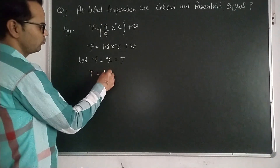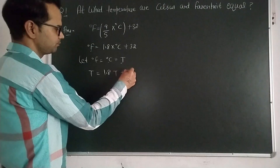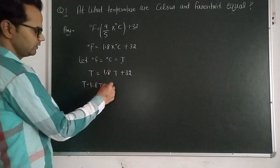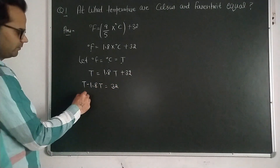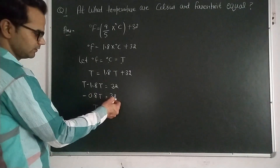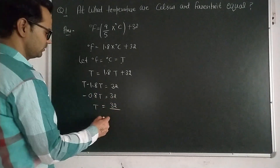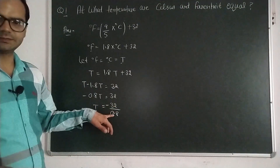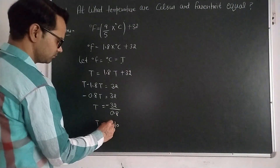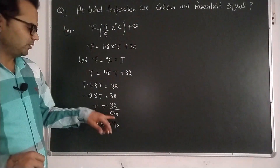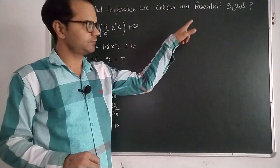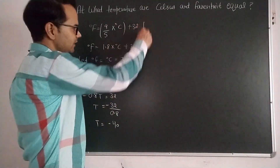Substituting: t = 1.8t + 32. Solving: t − 1.8t = 32, which gives −0.8t = 32. Further solving, t = 32 ÷ (−0.8), so t = −40. The value of t is −40, meaning at −40 degrees, Celsius and Fahrenheit will show the same reading.